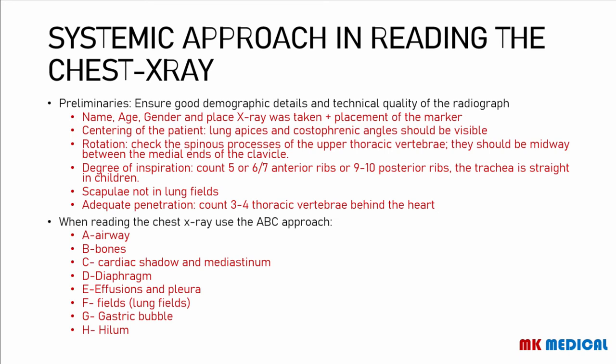Before you actually read the X-ray, you should have ensured it has good technical qualities and some preliminaries have already been ticked: the demographics, the marker present on the X-ray, whether the patient is well-centered, and if there's no rotation. Then check the degree of inspiration, ensure the scapulae are not in the lung fields, and that there is adequate penetration. When reading the chest X-ray, we use the ABC approach: A for airway, B for bones, C for cardiac shadow and mediastinum, D for diaphragm — all four covered in the previous lecture. Then E for effusions and pleura, F for lung fields, G for gastric bubble, and H for the hilum. We shall cover the remaining four topics in this lecture.